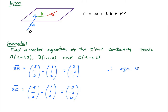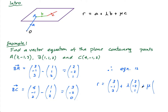Those are our two direction vectors. The vector equation of the plane is: r = (3, −1, 3) + λ(2, −2, 1) + μ(3, −2, 0), where (3, −1, 3) is the position vector of A.